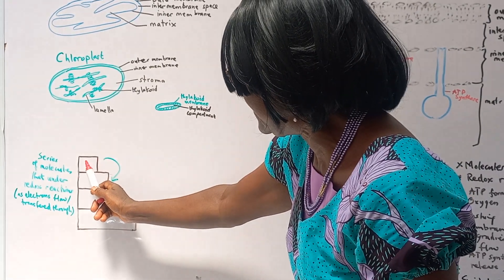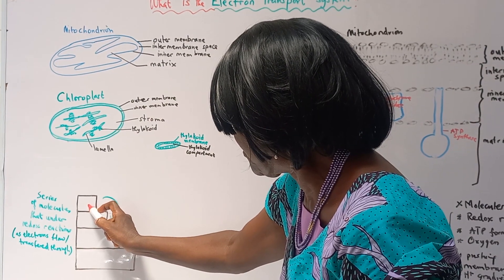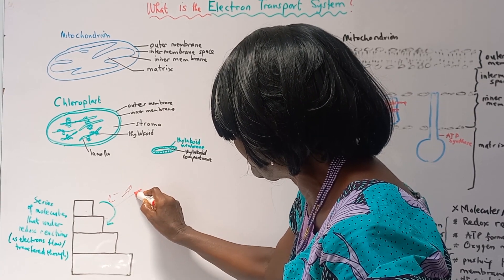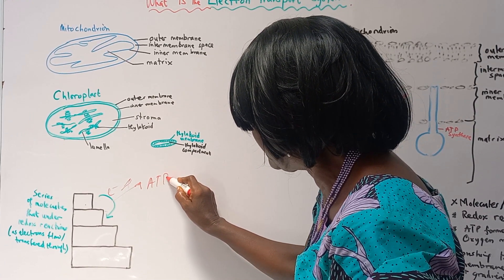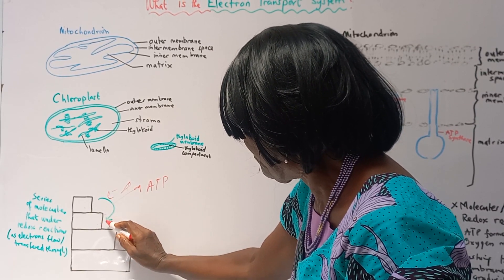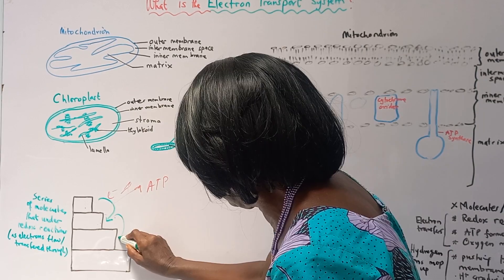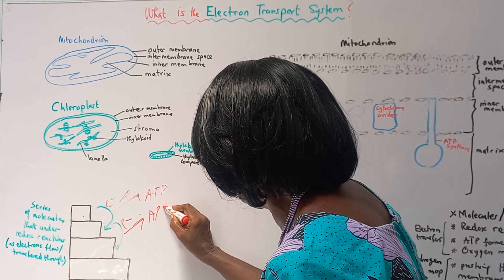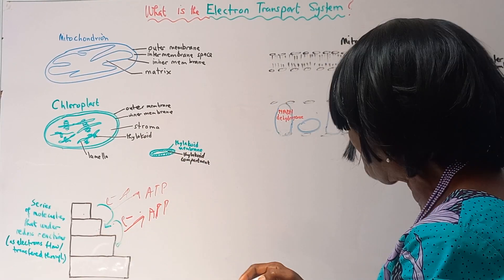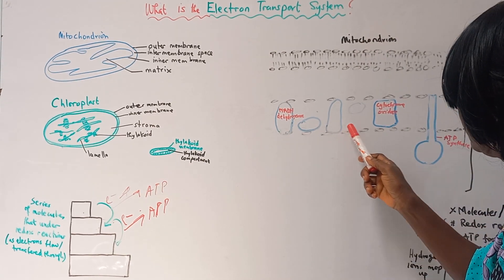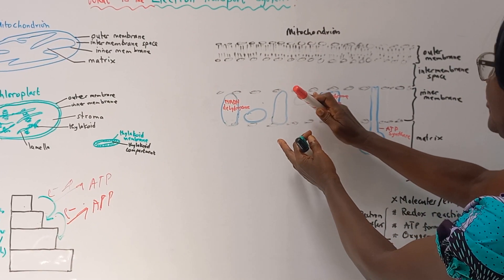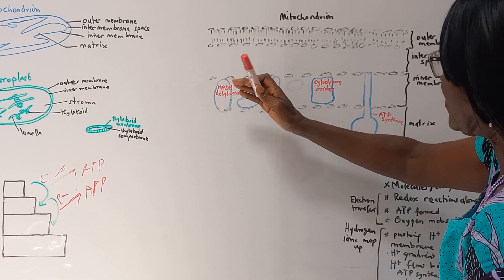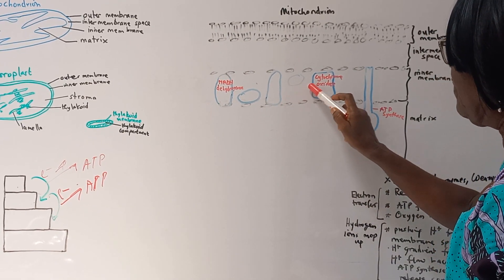Molecules are arranged in series as in the electron transport system. When a molecule loses electrons, it becomes oxidized, gives off energy, and some of that energy is used to form ATP. The molecule that accepted the electrons becomes reduced, and it will also give up those electrons, become oxidized, and produce energy — some of which forms ATP. That is what happens in the electron transport system.